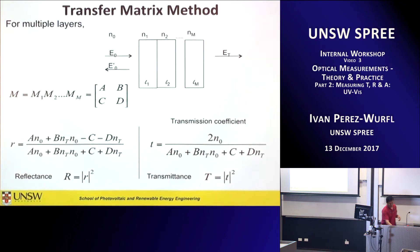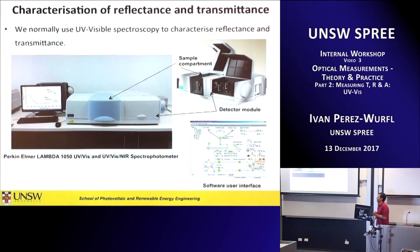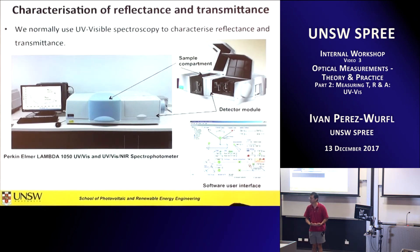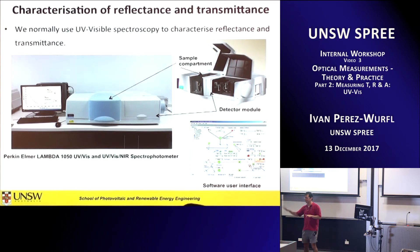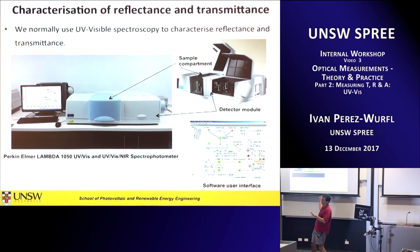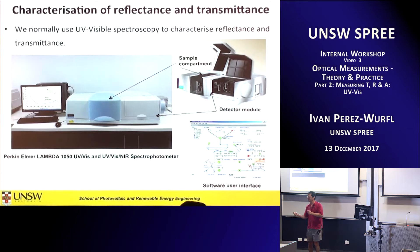Now that you know what goes on in a simulation, let's go back to the real world and think about how we actually perform measurements. We'll link them together: I've measured big R or big T, or both. Then I have this mathematical machine that relates big R and T to little r and little t, and those are related to n and k.